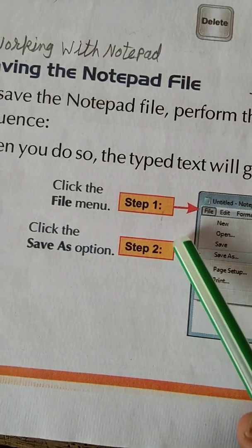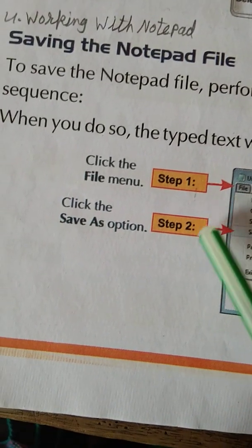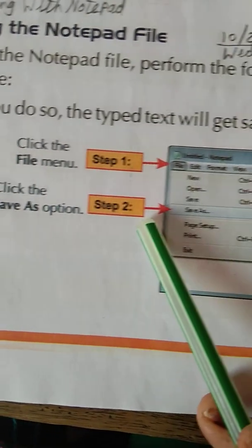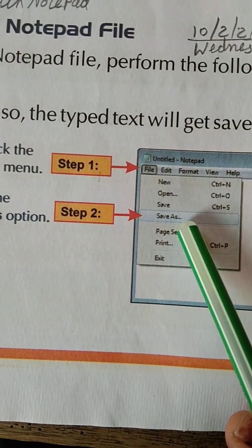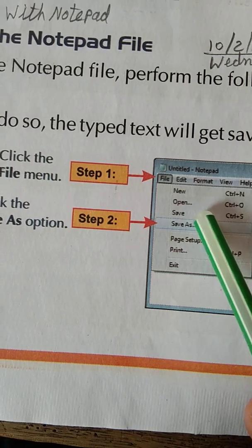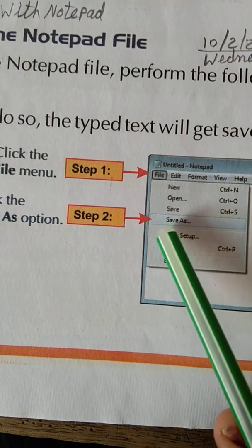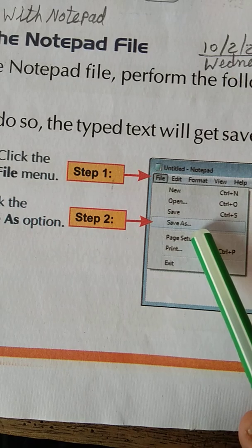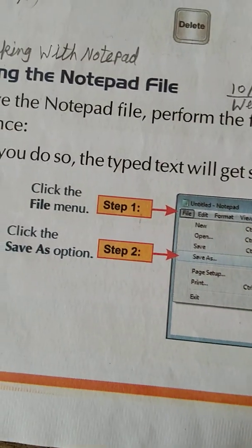So first of all, open the file menu. Second, from the file menu select Save As. First we did Save, now we are giving our name — the name of our file. So we are selecting Save As from the file menu.